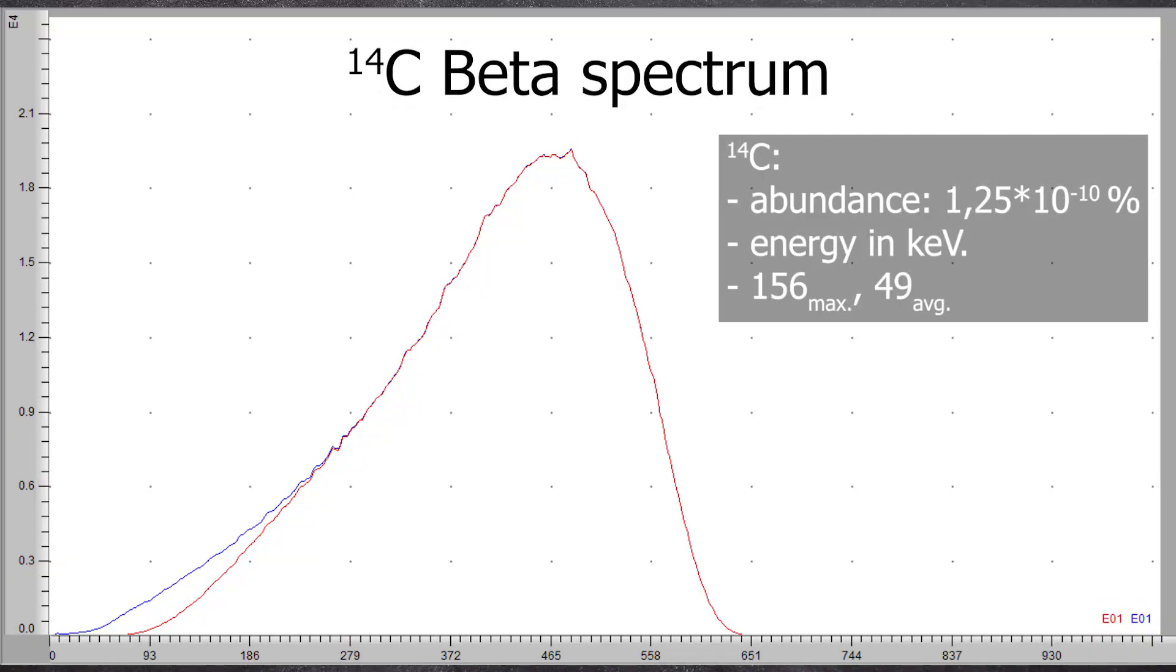When all three detectors simultaneously register light, we call this a triple coincidence, a clear indication of a radioactive decay. These triple coincidences are particularly evident with carbon-14, which has a maximum beta energy of 156 kilo electron volts. The energy is sufficient to achieve good triple coincidences.